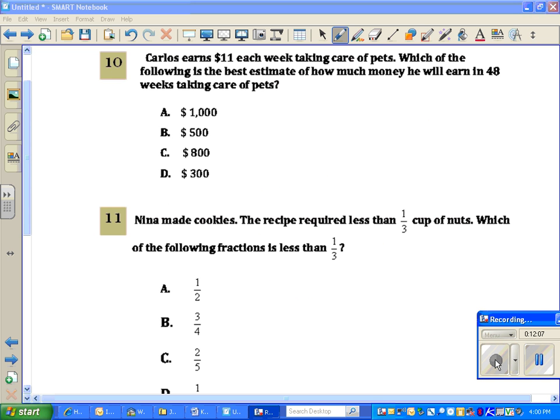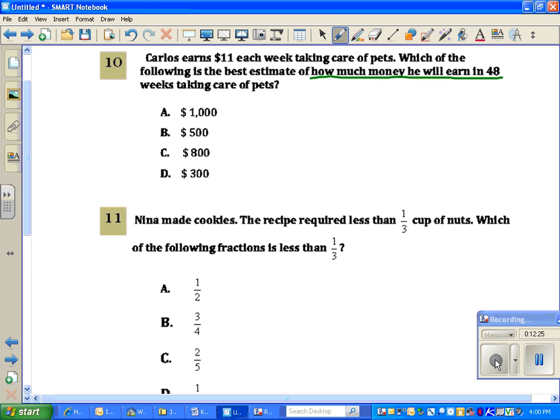Okay, question number 10. Carlos earns $11 each week taking care of pets. Which of the following is the best estimate of how much money he will earn in 48 weeks taking care of pets? I do notice the word estimate. So that's telling me I'm going to need to round first, then solve. It tells me he gets $11 each week. And it's asking about 48 weeks. So I'm going to estimate those two numbers so I can make it easy. Estimation goes to easy.